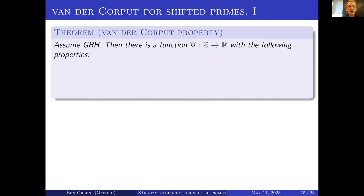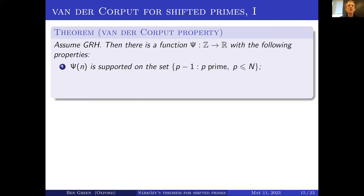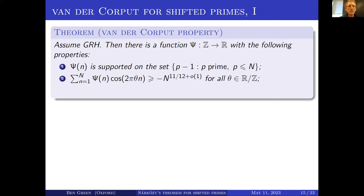Now let me go back to the shifted primes and state again the van der Corput property for them. I'm going to assume the generalized Riemann hypothesis, so all Dirichlet L-functions have all their non-trivial zeros on the half-line. Then I claim there is a weight function ψ with the following properties: it's supported on the shifted primes less than n, it has almost non-negative real part of its Fourier transform, it's normalized to have average value roughly one, and ψ depends on n.